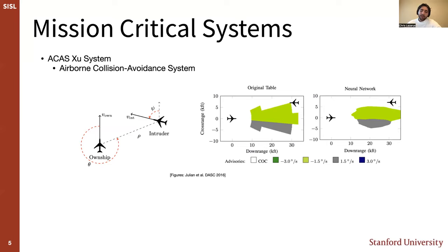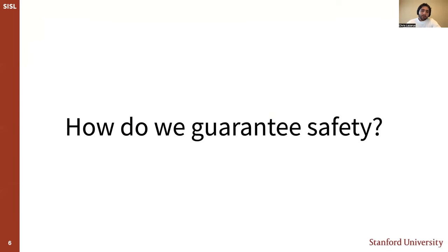With these examples, I'm trying to motivate a key question that has guided my work: how do we guarantee safety? If we want to fulfill the promise of machine learning, or at least take advantage of modern models for many different tasks, we need to find ways to guarantee that they will induce safe behavior for any application that is safety or mission critical. I personally think most impactful applications involving human beings or any cyber-physical application require guaranteed safety.